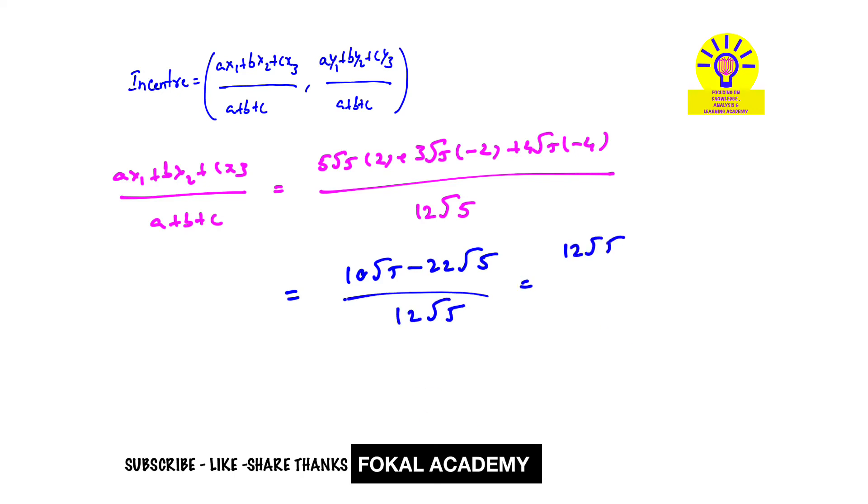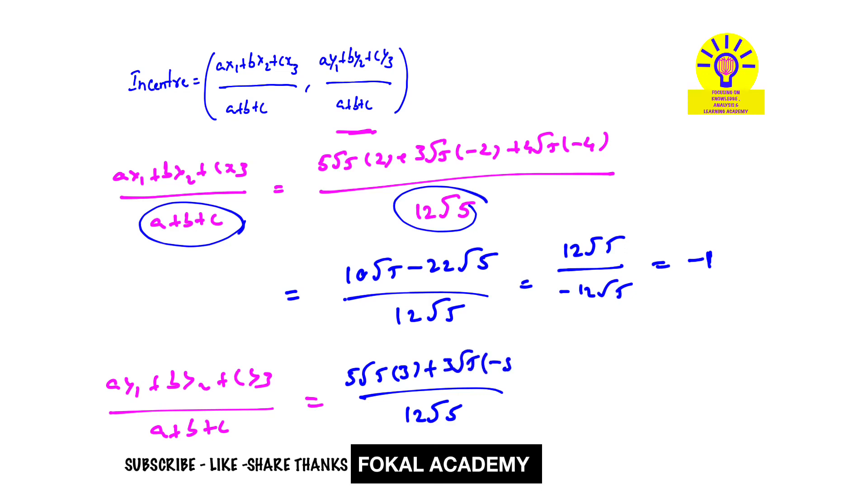Similarly, find (ay₁ + by₂ + cy₃)/(a + b + c). The denominator is 12√5, and the numerator by substituting becomes 5√5×3 + 3√5×(-5) + 4√5×6. By simplifying this we will get 2. So (-1, 2) is the incenter for the given triangle. This is the process of simplification. Thanks for watching, please subscribe, like, share.